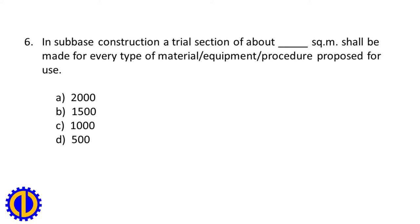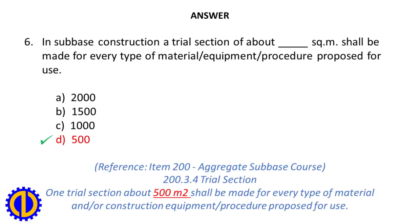Question 6. In sub-base construction, a trial section of about blank square meters shall be made for every type of material, equipment, and procedure proposed for use. A. 2000. B. 1500. C. 1000. D. 500. Answer: D. 500.